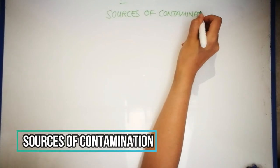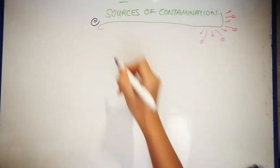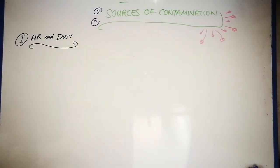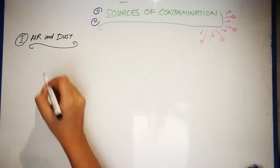The sources of contamination include air and dust of the storage surroundings. The air surrounded us is full of spoilage microbes.